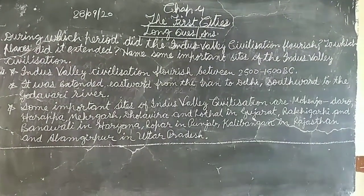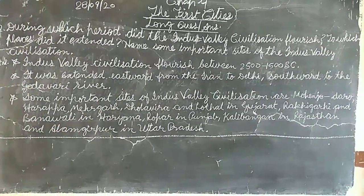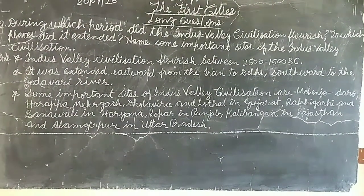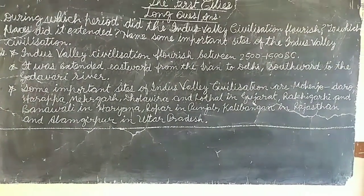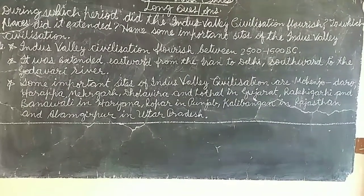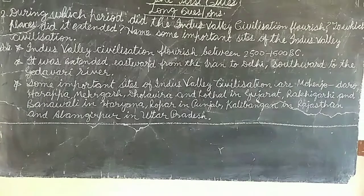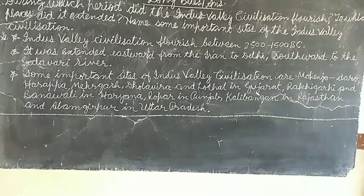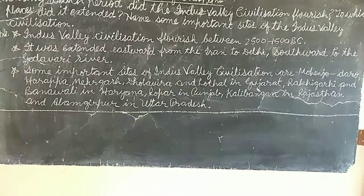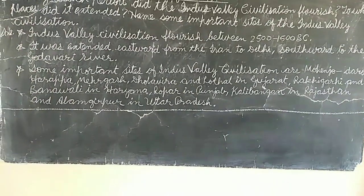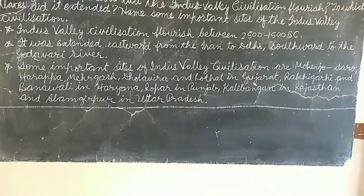Second question: during which period did the Indus Valley civilization flourish, to which places did it extend, and name some important sites? Answer: the Indus Valley civilization flourished between 2500–1500 BCE. It was extended eastwards from Iran to Delhi and southwards to the Godavari river.